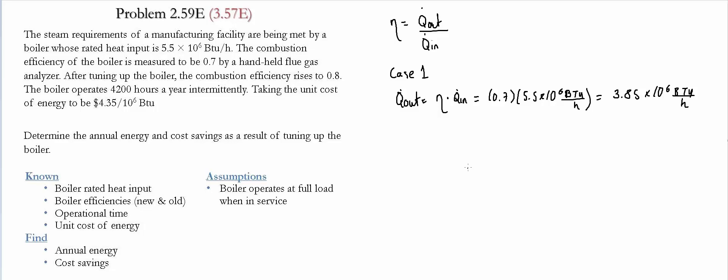So for case two, what we want to find out is the amount that is going in. So in that case, the amount of Q in for the second case is going to be the same Q out that we have for the previous case divided by the efficiency after the boiler was tuned up.